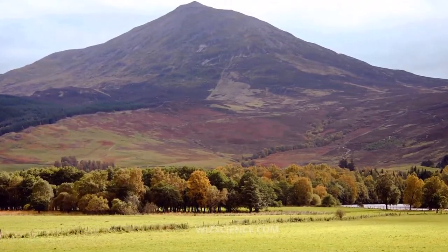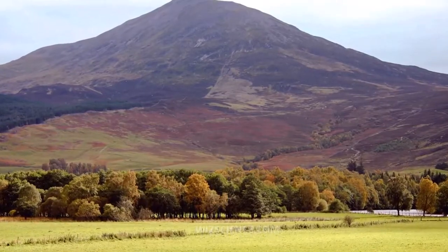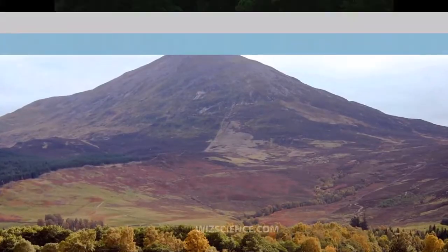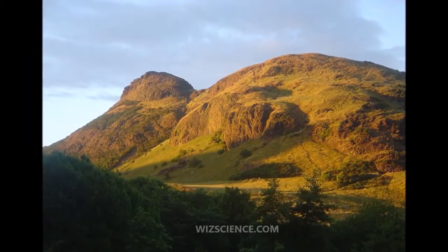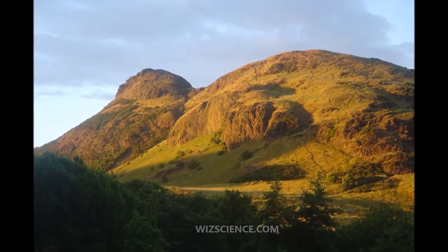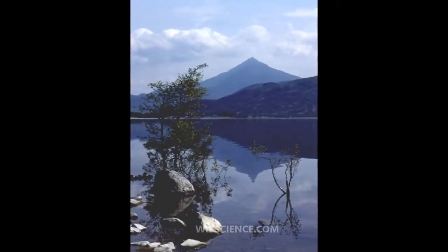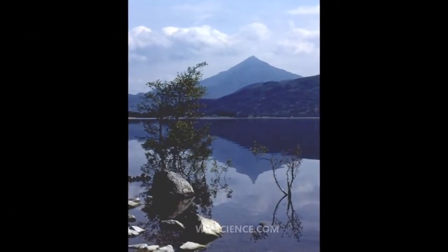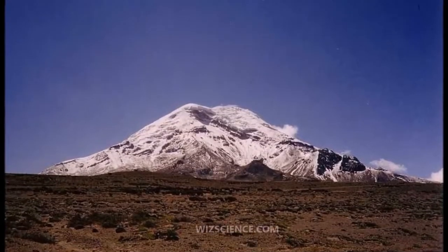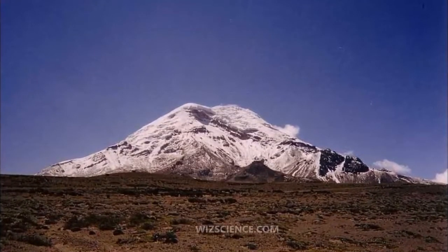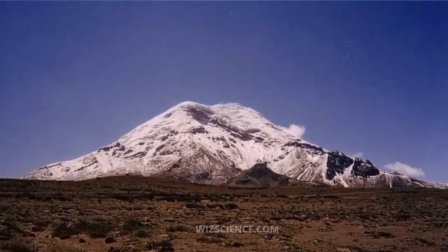Schiehallion was considered the ideal location after a search for candidate mountains, thanks to its isolation and almost symmetrical shape. One of the triggers for the experiment were anomalies noted during the survey of the Mason-Dixon line. The experiment had previously been considered but rejected by Isaac Newton as a practical demonstration of his theory of gravitation.